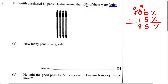Now that we know this information, the question asks how many pens were good. Even though we know the percentage, that's not the answer. We found that 85% of pens are good, but the percentage does not tell us the exact amount of pens that are good. To find the exact number, we're going to set the problem up as: total multiplied by the percent of good pens.